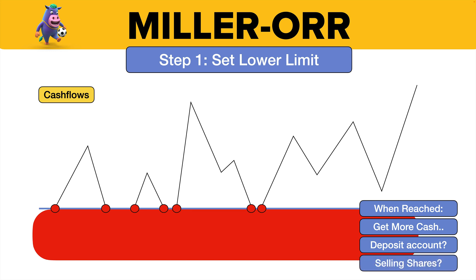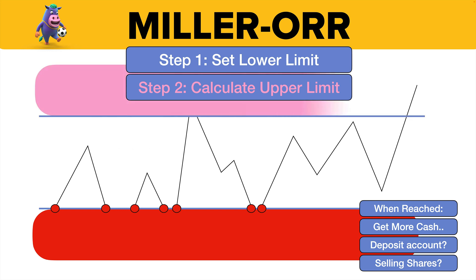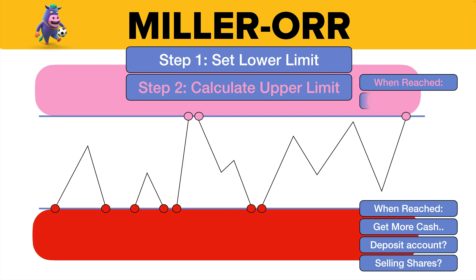We need to get more money at that stage. The Miller-Orr model also says you should calculate — notice the word calculate, you don't set it — you calculate the upper limit. What it suggests is: never let your bank balance go above this upper limit because then it's wasting money. When it's reached and you've got too much cash, you need to use that cash — buy shares or put it into your deposit account. Miller-Orr sets two limits and allows for cash flows to go up and down in between them of their own free will.